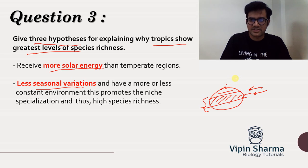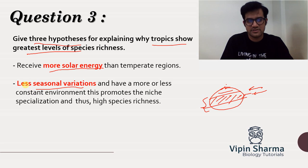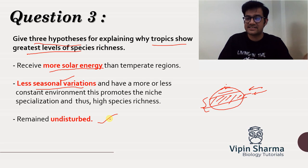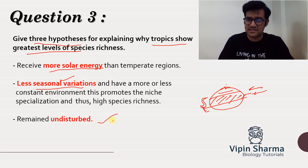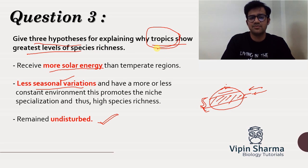In temperate and polar regions, the seasonal variation in temperature and rainfall conditions is quite high. More biodiversity is a result of less seasonal variation in tropical areas. The third hypothesis is that tropical areas remained relatively undisturbed. The Earth has suffered many changes in the past, like glaciers and the ice age, but tropical areas relatively remained undisturbed during those periods. These are the three main hypotheses suggesting why tropics have more biodiversity and more species richness.